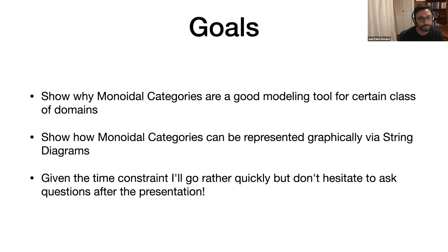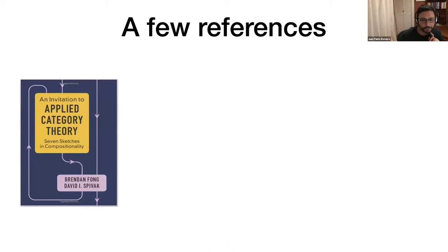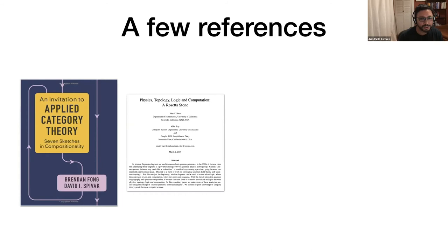Before starting, I would like to mention four exceptional resources. The first one is Applied Category Theory by Fong and Spivak. I think this is more or less well-known in the community. It has a broad range of applications: databases, resource management, et cetera. The second one is not as well-known, because it's not specifically about computer science, but it's fascinating. It really shows the power of monoidal categories to model a broad range of phenomena, ranging from linear algebra, logic, physics, computer science, et cetera. I've put the full reference at the end of the presentation.